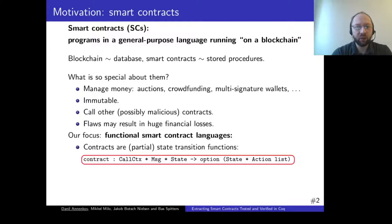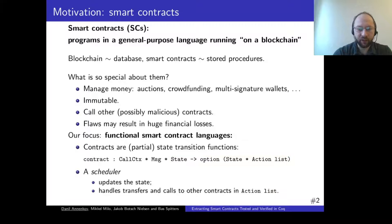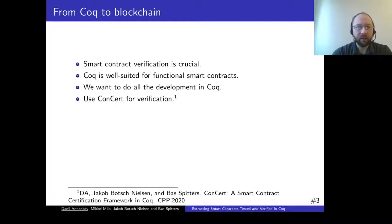It is well known that flaws may result in huge financial losses. We focus our attention on functional smart contract languages, where contracts become partial transition functions with the following signature: they take some information about the current call, user input, and old state, and produce new state and a list of actions. A special piece of software called a scheduler performs state updates and handles transfers and calls to other contracts in the action list.